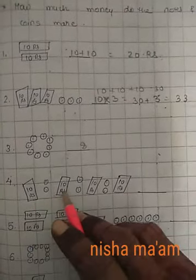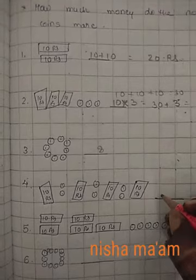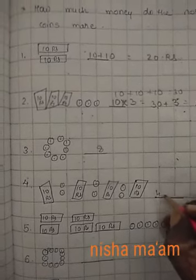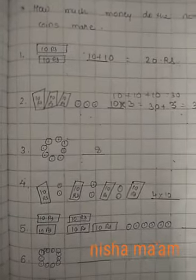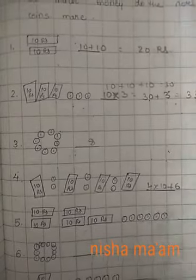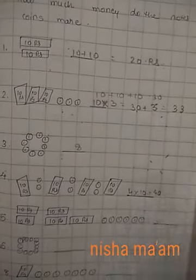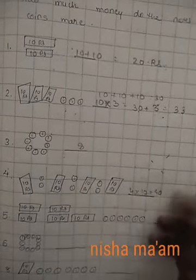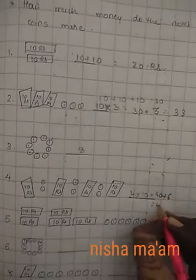Now we have notes and coins. How many notes? 1, 2, 3, 4, which is 4 times 10. And how many coins? 1, 2, 3, 4, 5, 6. So 40 plus 6 equal to 46 rupees, right?